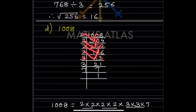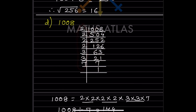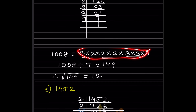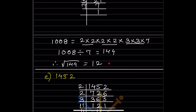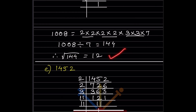For 1008, we find the factors using 2 and 3. After writing the factors and grouping into pairs, 7 is alone. So we divide 1008 by 7, which gives 144. The square root of 144 is 12, because 12 × 12 = 144.